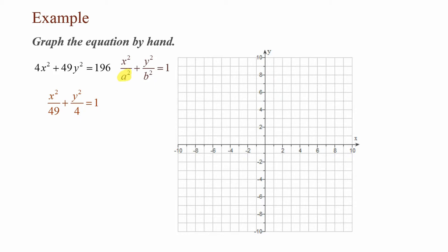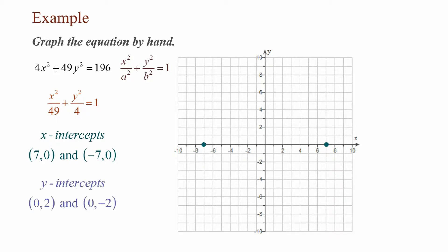Now I can find a: a² = 49, the square root of 49 is 7, so a = 7. My x-intercepts are (7, 0) and (−7, 0). For the y-intercepts: b² = 4, so b = 2. My y-intercepts are (0, 2) and (0, −2). Now that I have the four intercepts, I can draw my ellipse — the graph of 4x² + 49y² = 196.